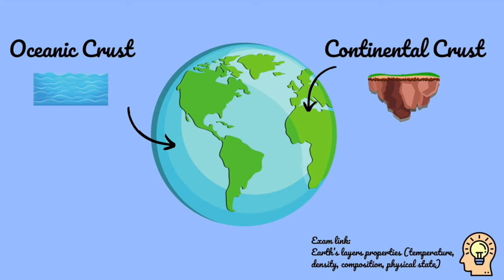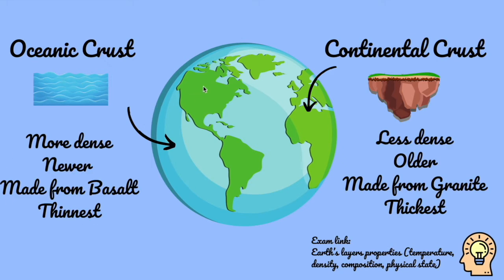The first property is that the oceanic crust is more dense. Density is how many particles there are within something — how compact, how hard, how heavy something is. The oceanic crust is more dense because it is being compacted by the ocean above, which is pushing down on it, compacting those particles and squashing them together. This is the most important property: when oceanic and continental crust meet, because the oceanic is heavier and more dense, it sinks below the continental crust.